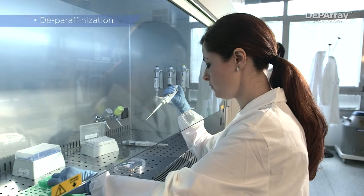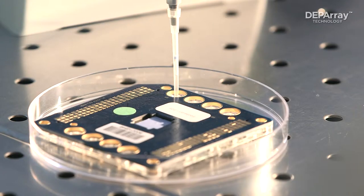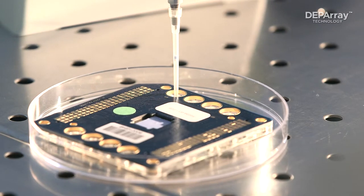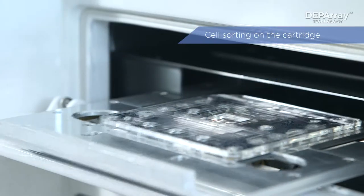The suspension of cells is stained with markers for specific cell types. Stained cells are loaded onto the DEP Array and tumor cells are then separated from stromal cells with 100% precision.